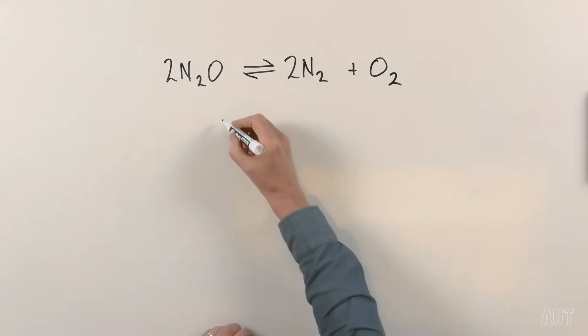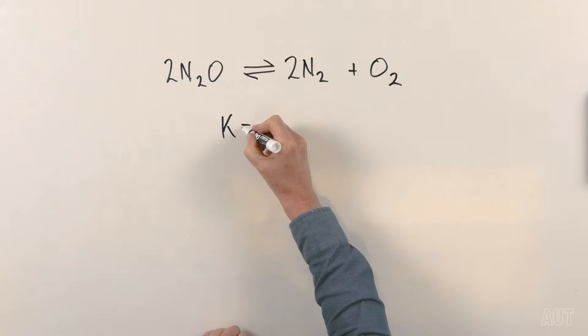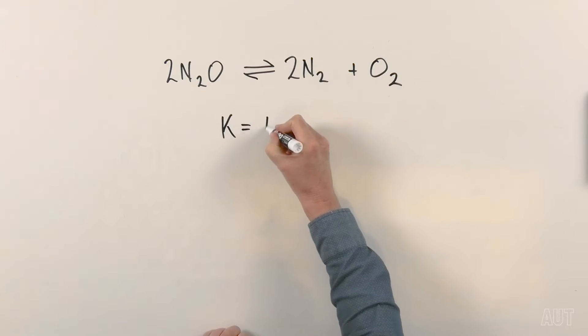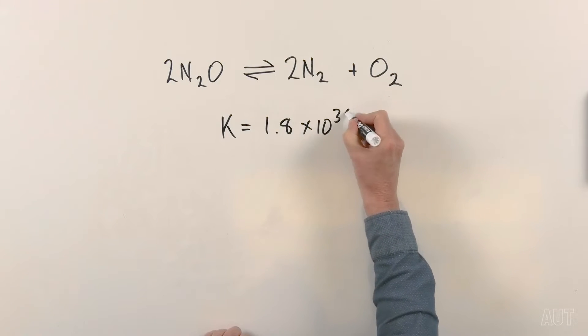The interesting thing about this equilibrium is the value of its equilibrium constant. K for this equilibrium is 1.8 times 10 to the power of 36 — that is 1 followed by 35 zeros.